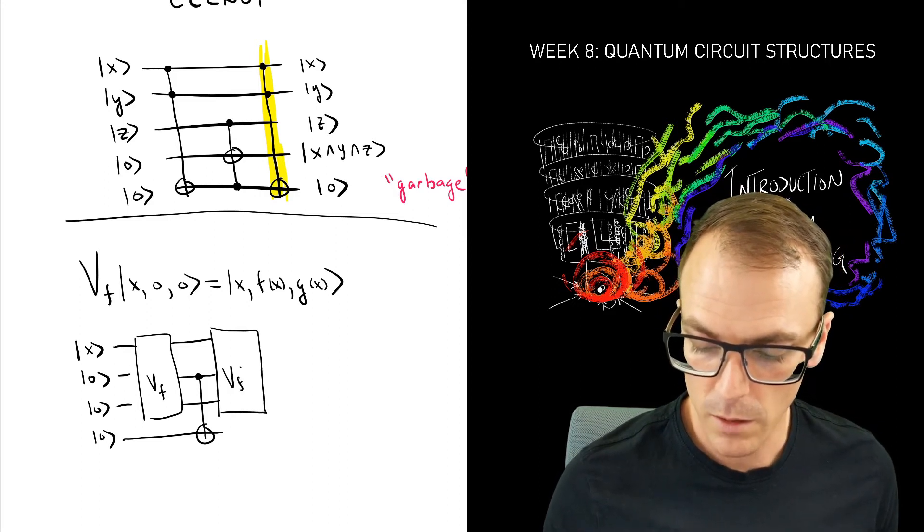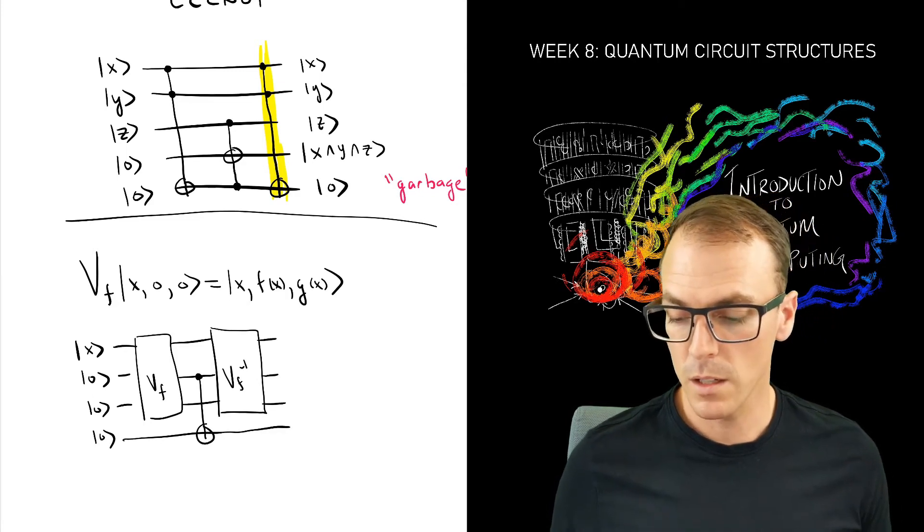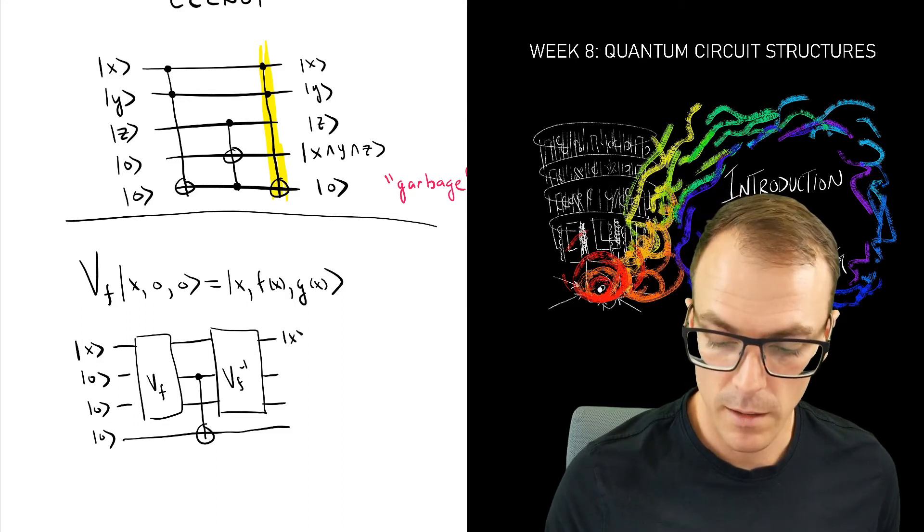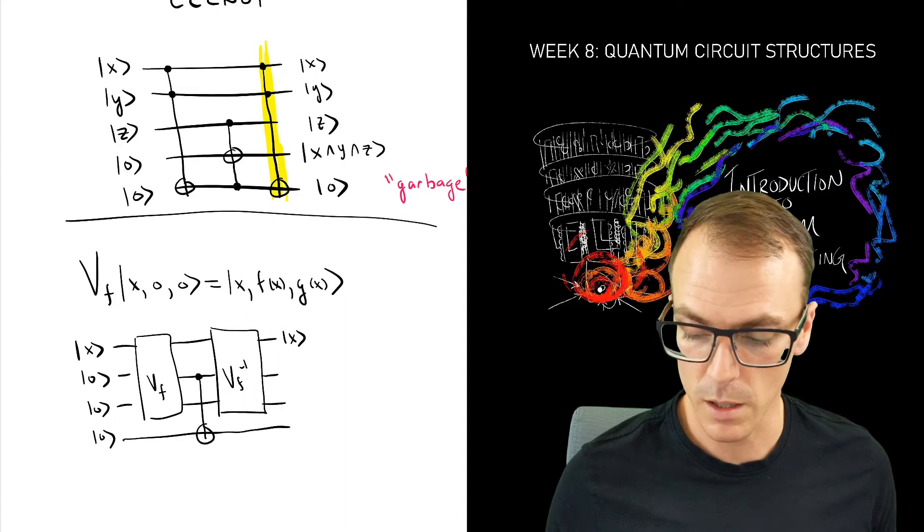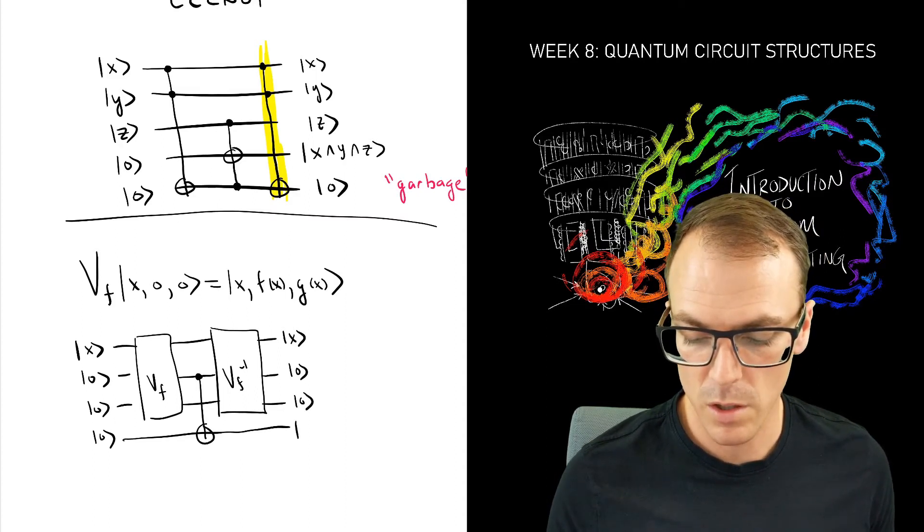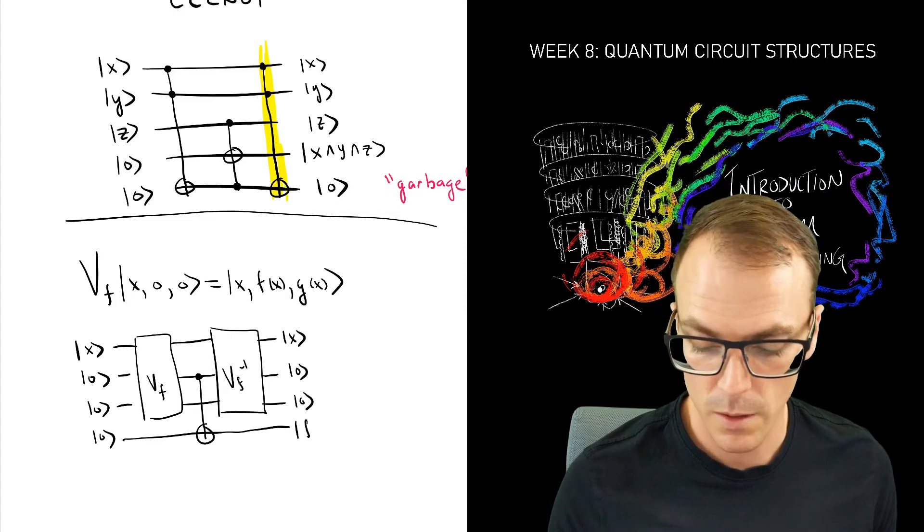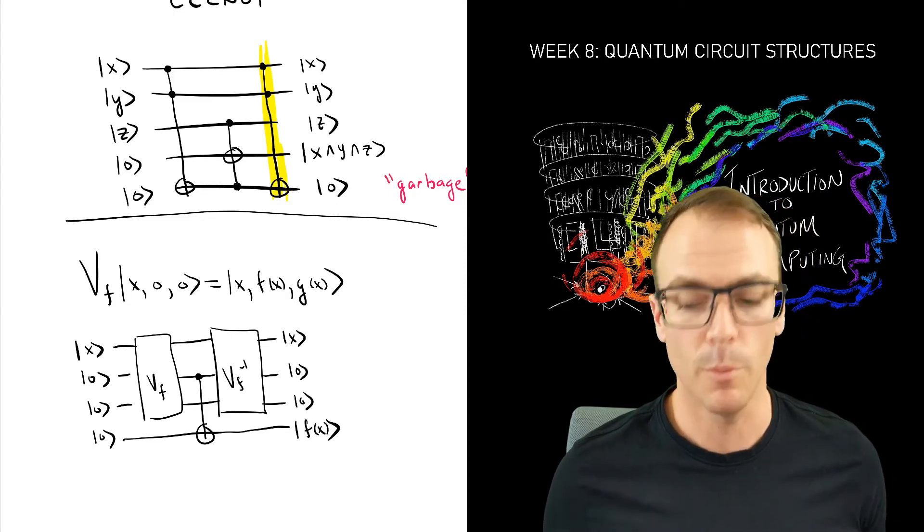Now we're going to invert and see what happens. The promise will be that the input register stays where it is. The other two scratch registers return to their original values. And the value of the function appears in the bottom register.